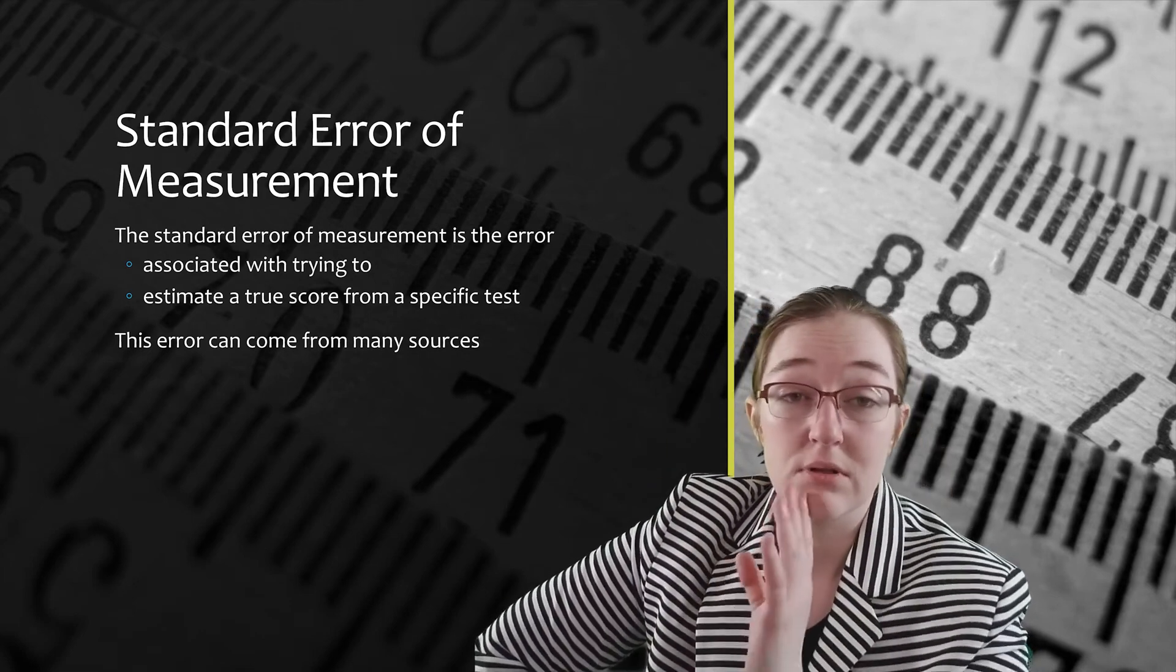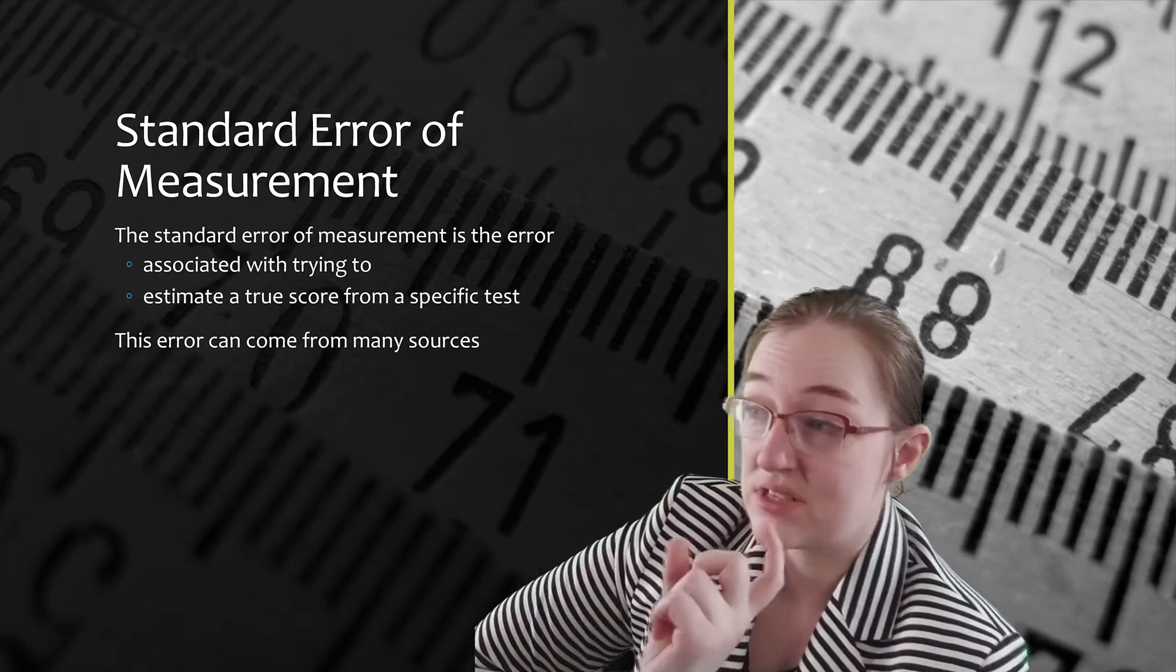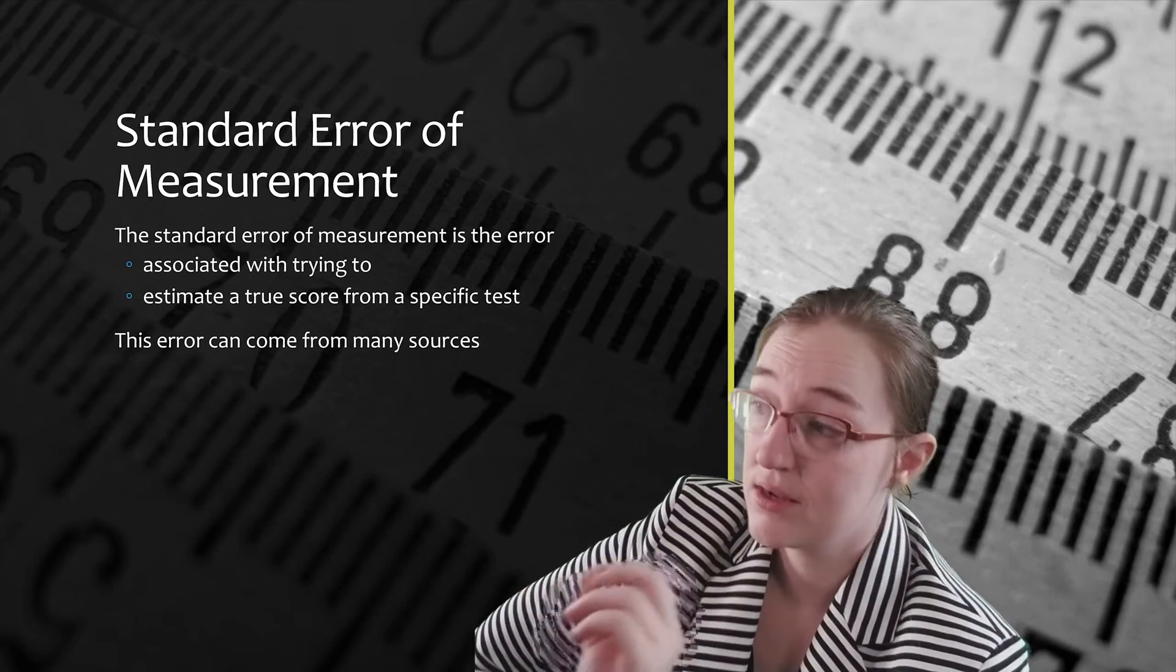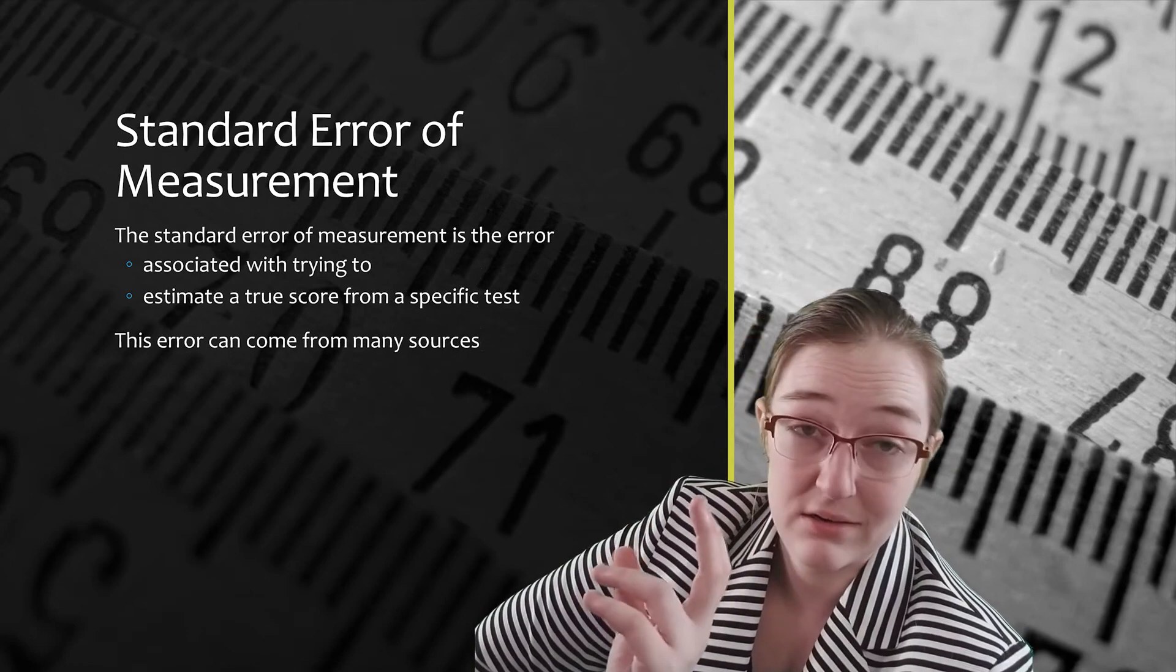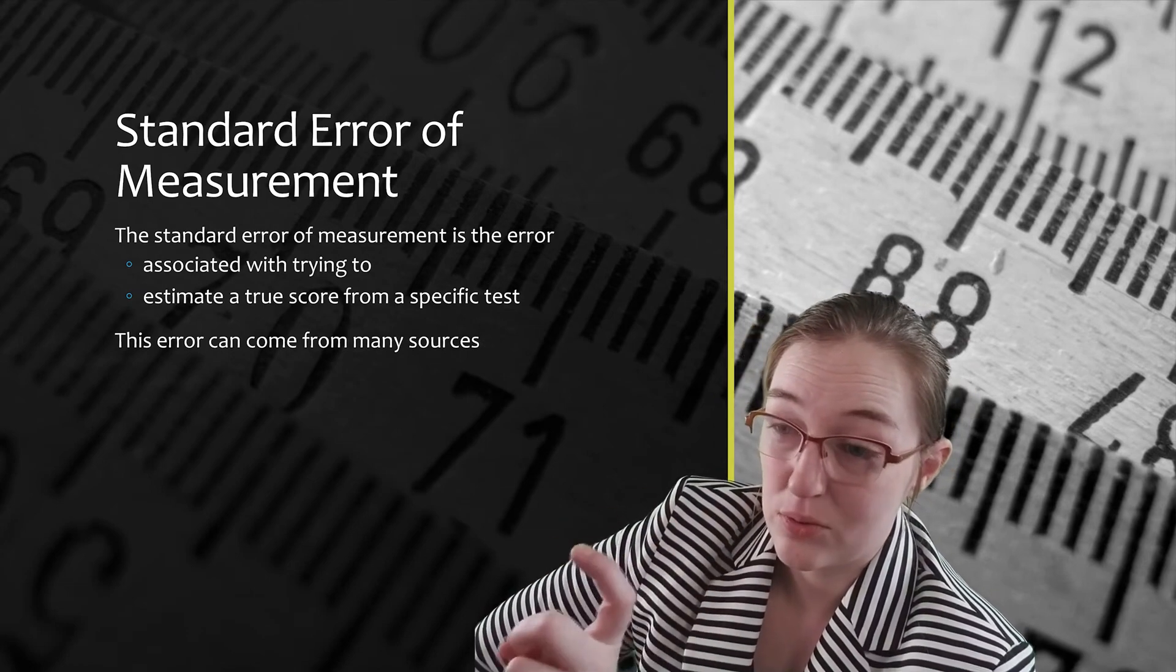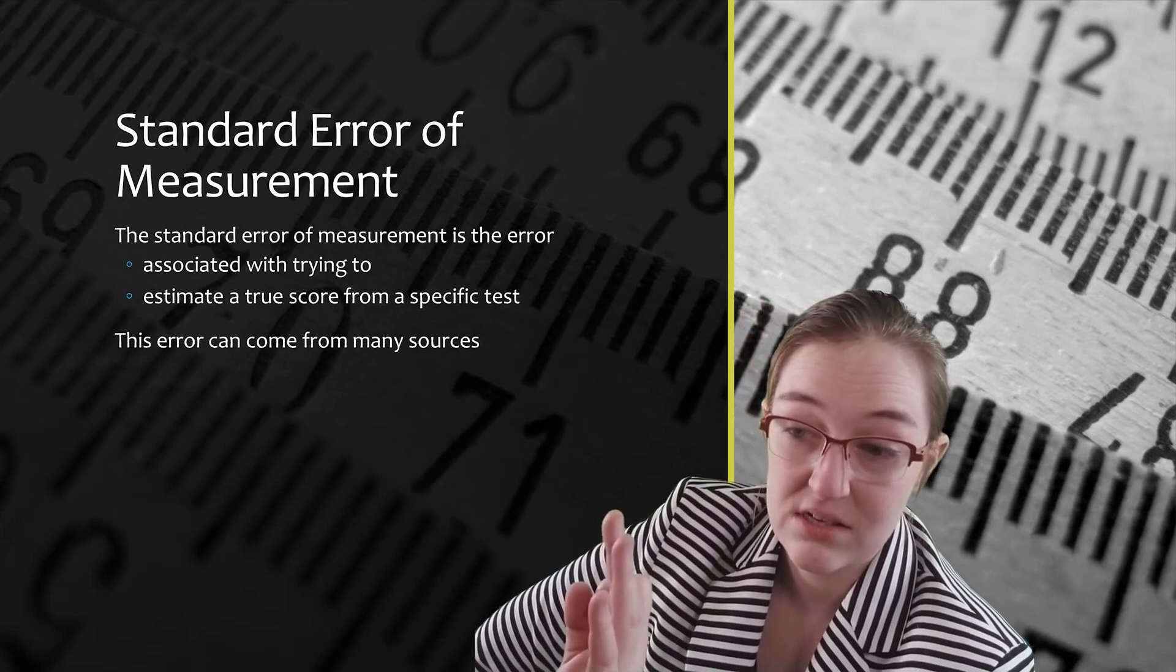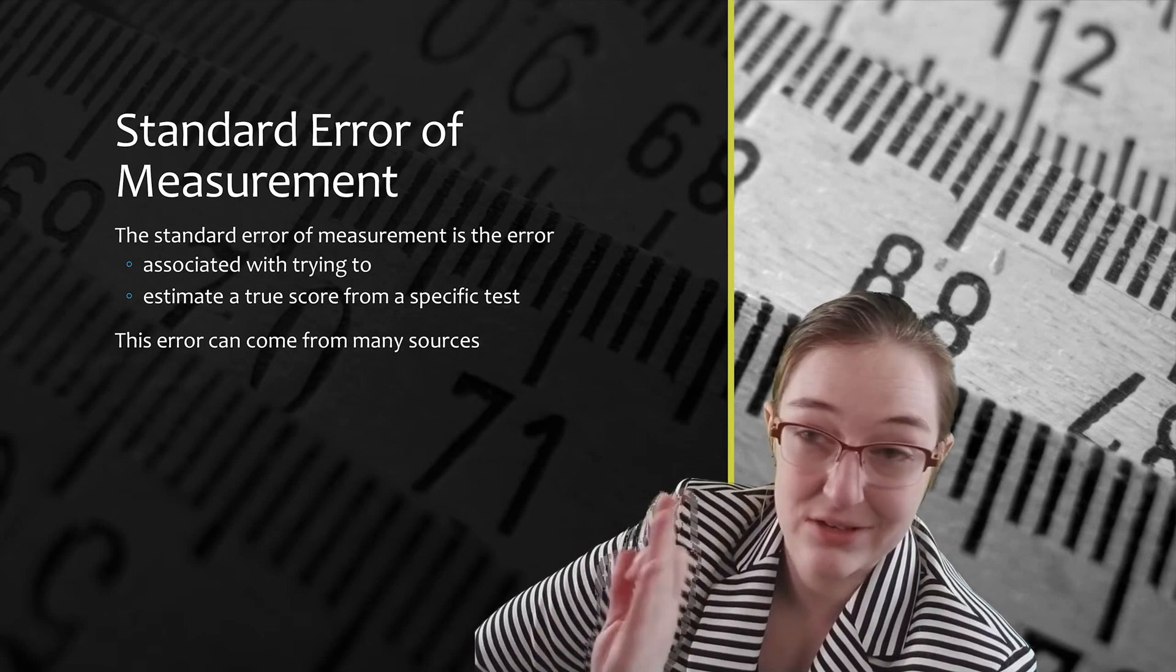So let's back up and actually talk about what this equation is. So the standard error of measure is the error associated with trying to estimate a true score for a specific test. And this error can come from many sources, but in order to get that value, we can multiply the unreliable portion of variance by the standard deviation of our test to obtain that standard error of measurement.